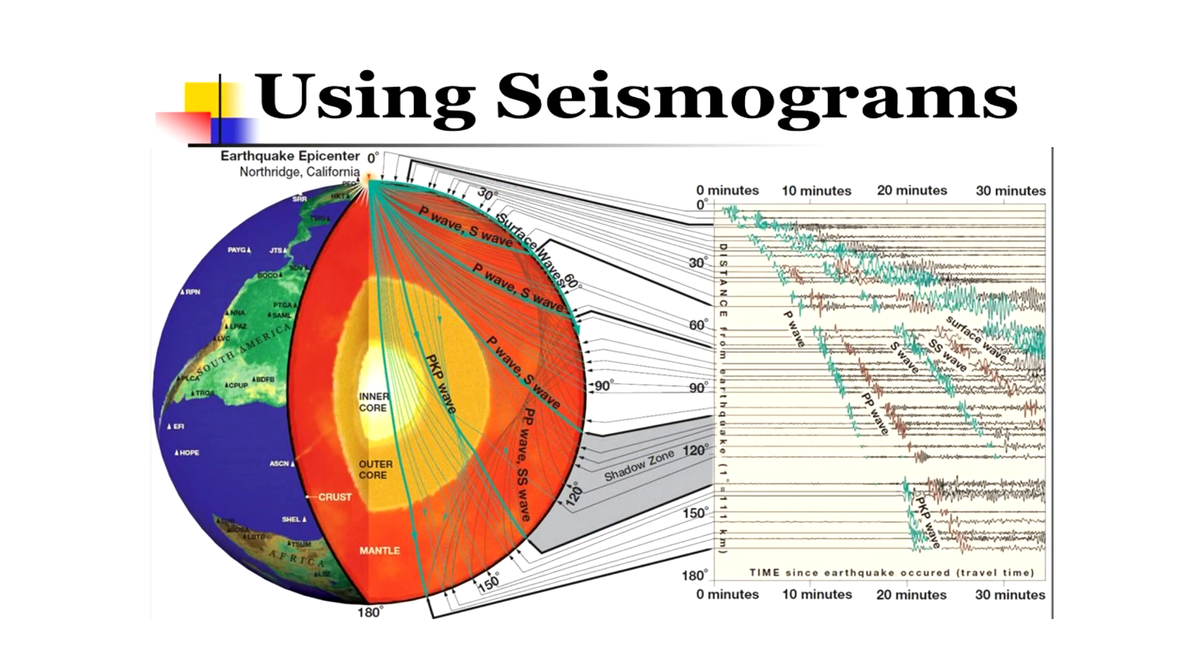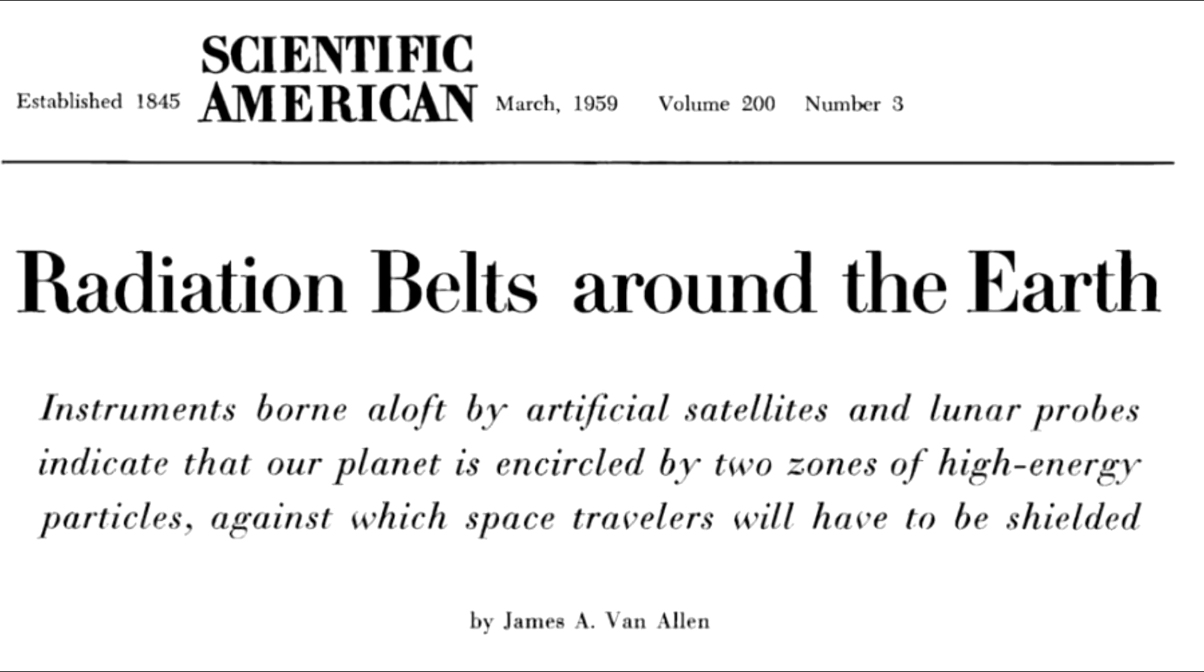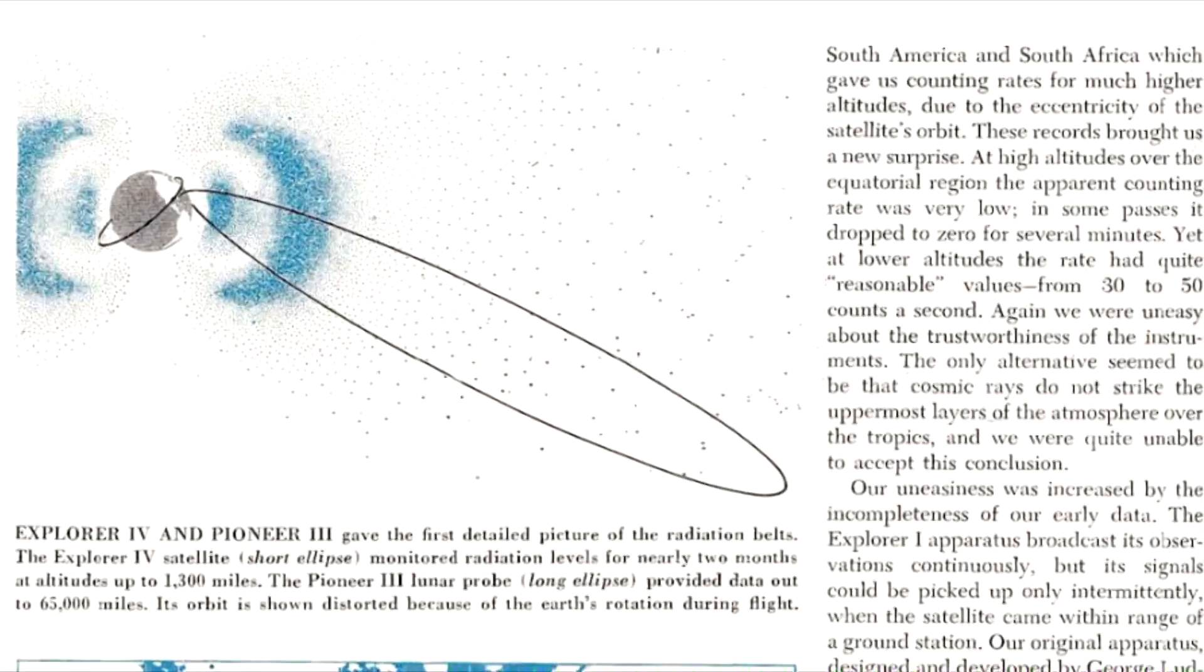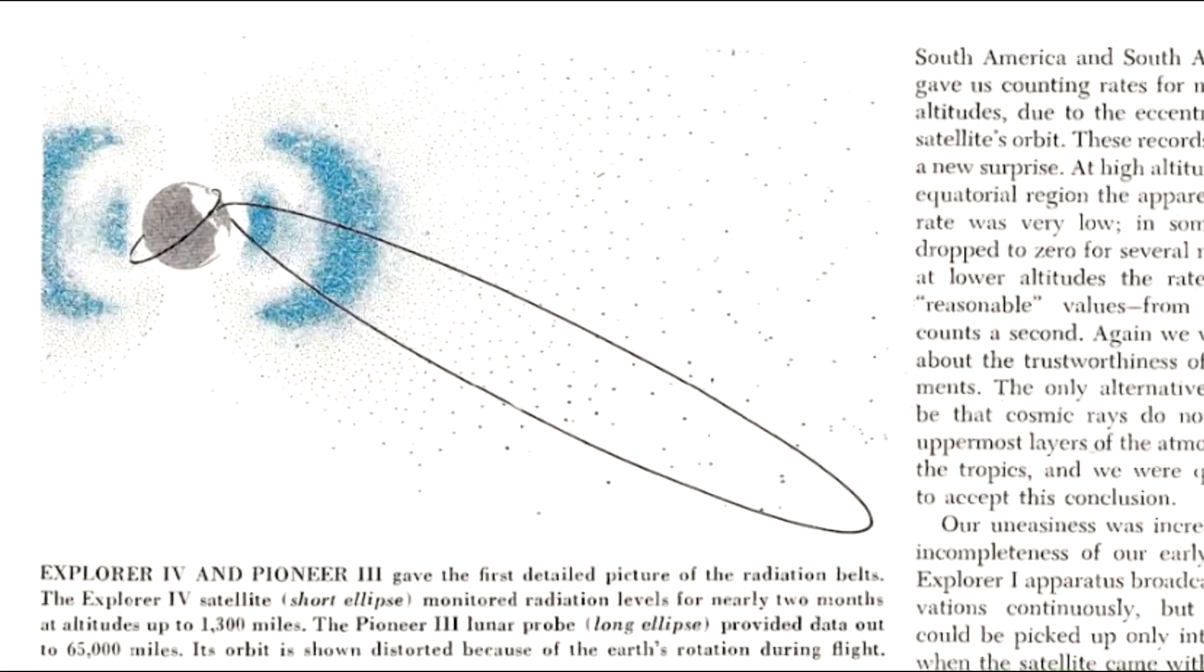Such seismic surveys have been established long before NASA existed, thus the existence and mere discovery of the Van Allen belt is only consistent with the Earth being a sphere and space travel being possible.